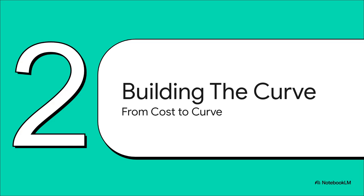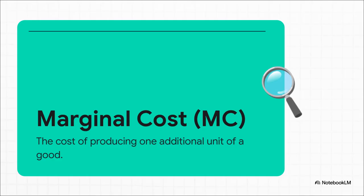So let's see how that one idea actually lets us build the supply curve. We're literally going to construct this thing from the ground up, starting with that simple concept of the cost for one more. In economics, there's a name for this — it's called marginal cost, or MC for short. It's just the change in your total costs when you decide to produce one more widget, one more tomato, one more anything. Producers are always thinking on the margin, asking: if I make just one more of these, what's it going to cost me?